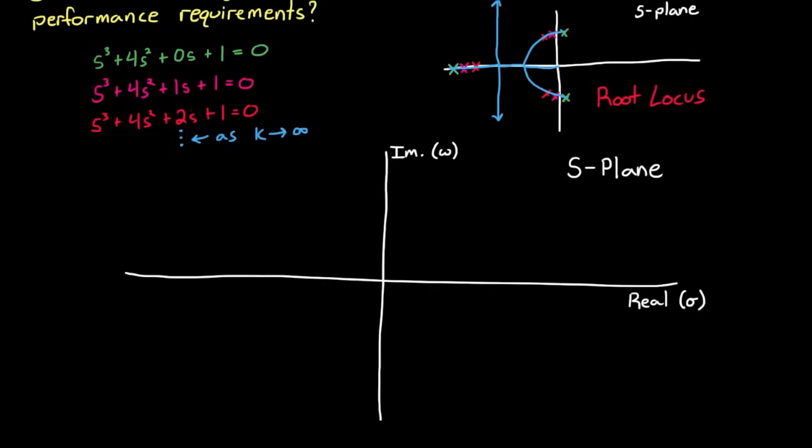And each location in the s-plane corresponds to a particular waveform in the time domain, through the equation e to the st. And through this equation you can see that if s is a real value, this corresponds to exponential growth or decay. If the real value is negative, then you're in the left half plane, and the system exponentially decays. And the further you are from the origin, or the further in the left half plane you are, the faster the signal decays.